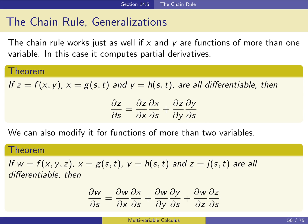Before we get to how the chain rule can help us, let's note some straightforward generalizations. One is that we could consider the possibility that x and y are not single-variable functions but multivariable functions. If x is a function of s and t, and y is a function of s and t, we might want to know how z changes as s changes. We rewrite the chain rule in terms of partial derivatives: the partial derivative of z with respect to s equals the partial of z with respect to x times the partial of x with respect to s, plus the partial of z with respect to y times the partial of y with respect to s. There are no ordinary derivatives here because x, y, and z are now multivariable functions.